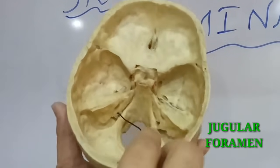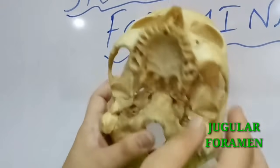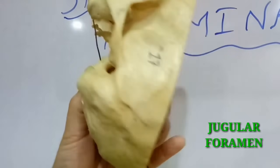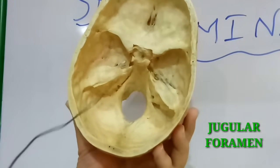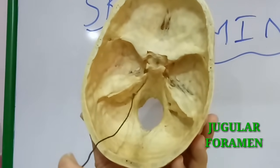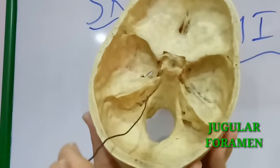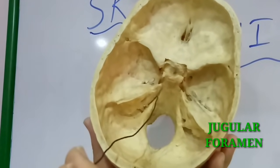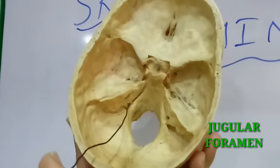Just below the internal acoustic meatus is the jugular foramen, which can also be seen from the basal view. The jugular foramen transmits the glossopharyngeal nerve (ninth cranial nerve), vagus nerve (tenth cranial nerve), and accessory nerve (eleventh cranial nerve). The inferior petrosal sinus occupies the petrooccipital fissure and also passes via the jugular foramen, opening into the internal jugular vein.